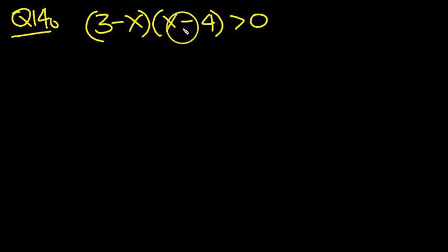(3 - x)(x - 4) > 0. Well, again, this is a quadratic, so let's just mark off the roots and do a little sketch so we can see what's what.